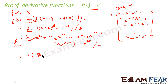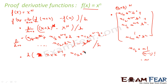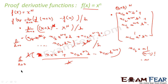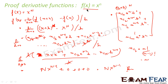Taking h common and dividing by h in the denominator, this becomes: nC1·x^(n-1) plus h·nC2·x^(n-2) ... plus h^(n-1)·nCn, with the limit as h tends to 0. Now nC1 equals n!/( (n-1)! ) which is n. Applying the limit h→0, all terms with h vanish, leaving n·x^(n-1).